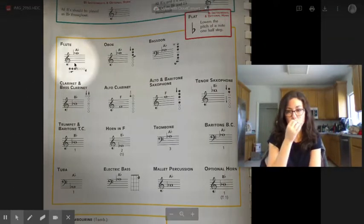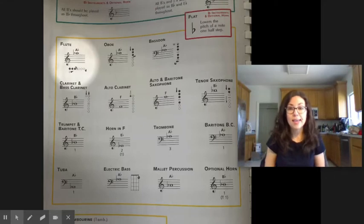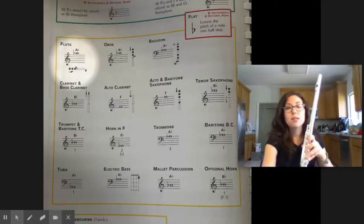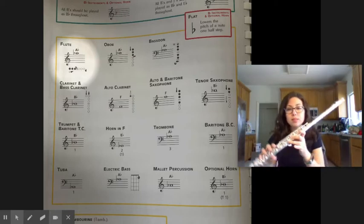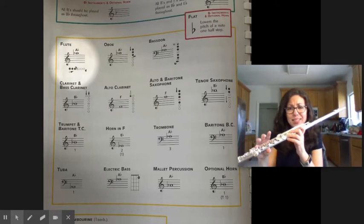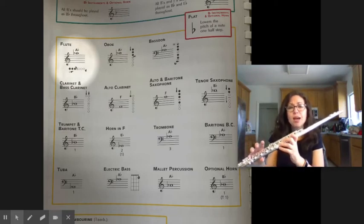Flutes, your new note is high A-flat, and that is played G with your pinky, as it shows you in that little box. So G, you finally get to press this key—it's so exciting—your pinky key, and that will make a high A-flat.